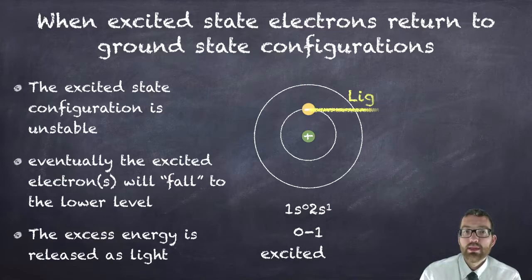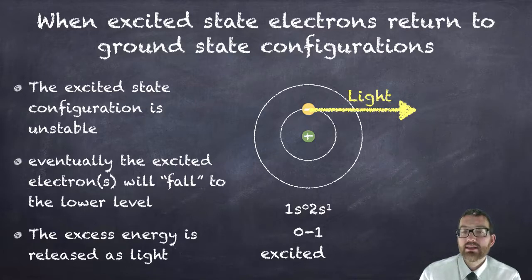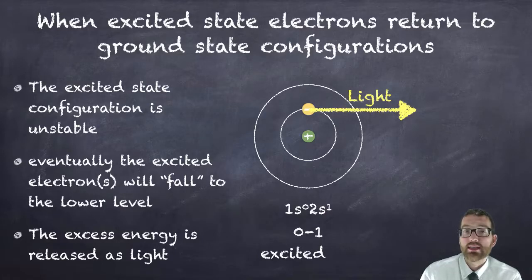When this happens energy is released. That excess energy absorbed when it jumped to the higher energy level is released, and when it's released it's released in the form of light. This is a very common Regents question. It is on almost every single Regents test I've ever seen.